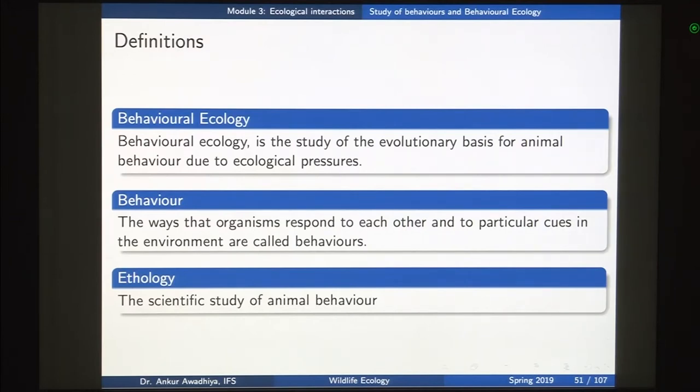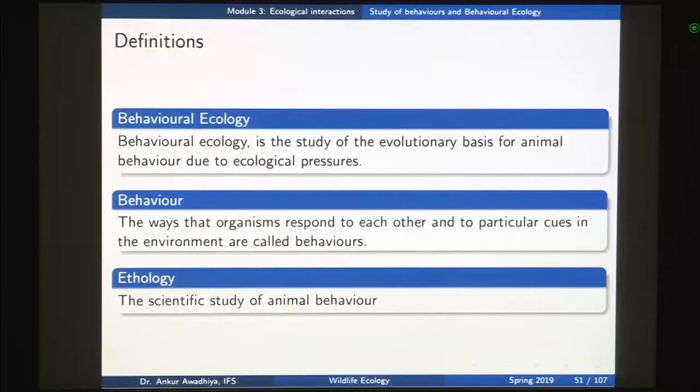Essentially, when we say behavioral ecology, we are saying that there is an ecological pressure governing the behavior of animals and we are trying to understand what is the relationship between both of these and how that also plays a role in the evolutionary process. Behavior refers to the ways that organisms respond to each other and to particular cues in the environment.